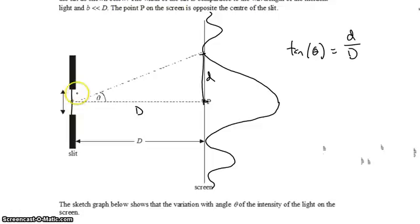We'll draw, using Huygens' principle, the ray coming from the top of the slit that also goes to that point, to that minimum.